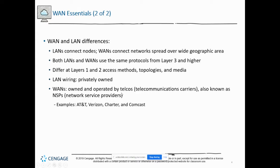Where LANs and WANs differ is at layer one and layer two — access methods, topologies, and the media used may differ between them. Local area networks are typically privately owned by the organization — like here, TCC owns all the Ethernet cable. Whereas with WANs, the wiring is typically owned by the telcos, telecommunications carriers, or network service providers — they own the wires connecting the LANs.